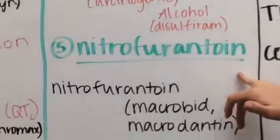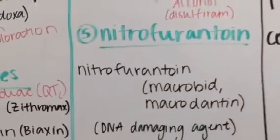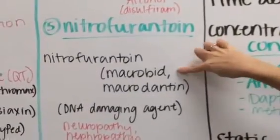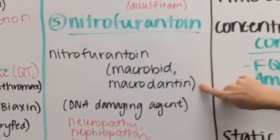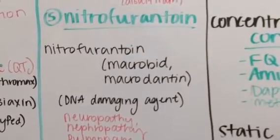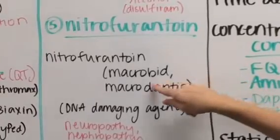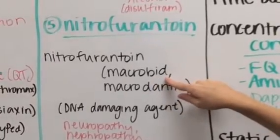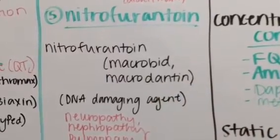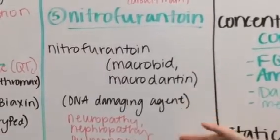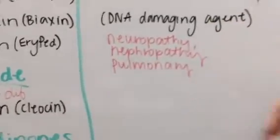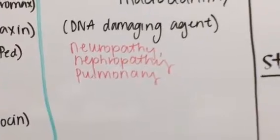And then our last anti-metabolite is going to be our nitrofurantoin. Two different brand names are going to be Macrobid and Macrodantin. How I like to remember this is basically based on dosing. Macrobid has the BID, so it's going to be two times a day, and then Macrodantin is going to be four times a day. Some different side effects are going to be neuropathy, nephropathy, and it can also have some pulmonary side effects as well.